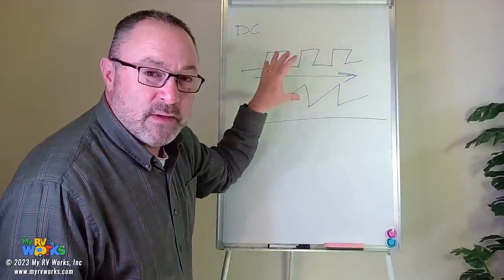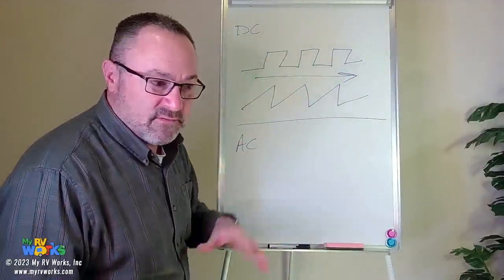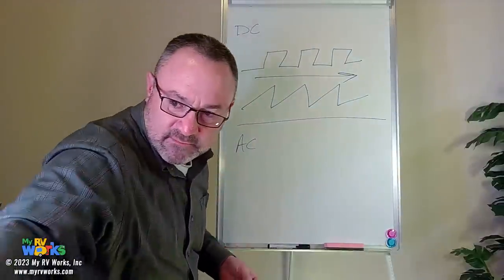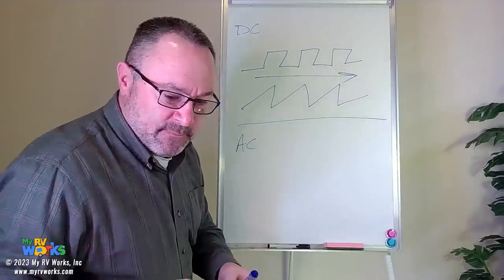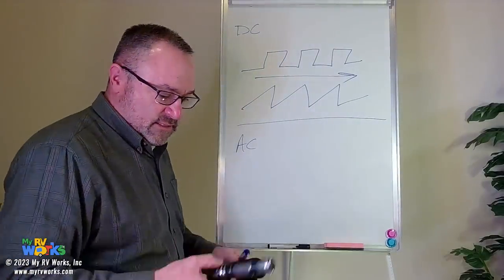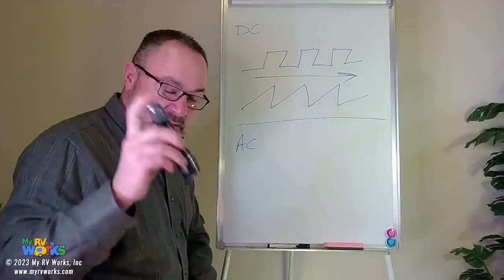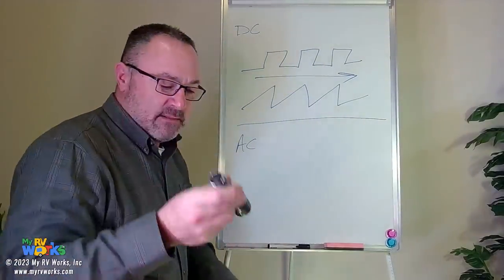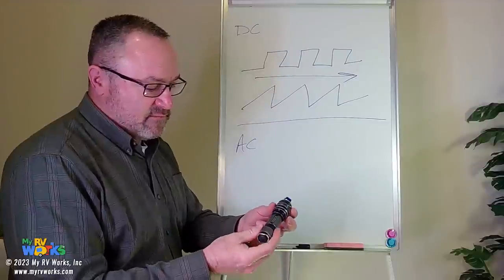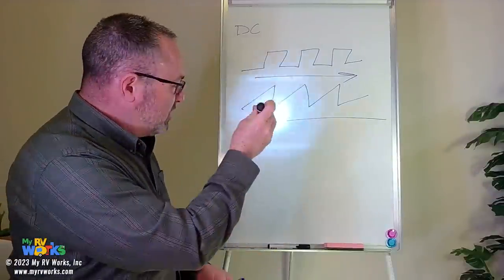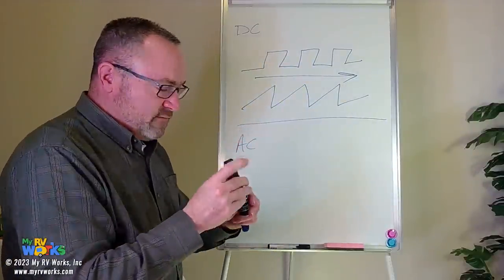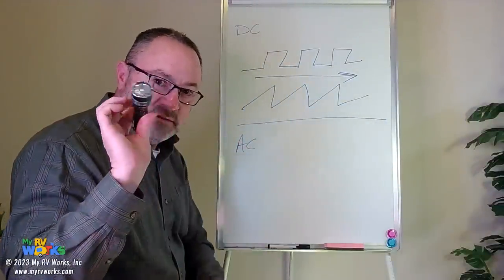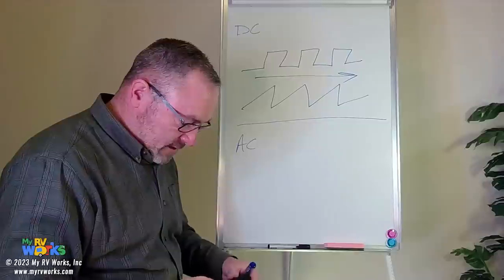We get DC from a battery. Think of your flashlight — it has batteries in it. You have a direct current of power flowing from the batteries directly to the element. That's direct current.